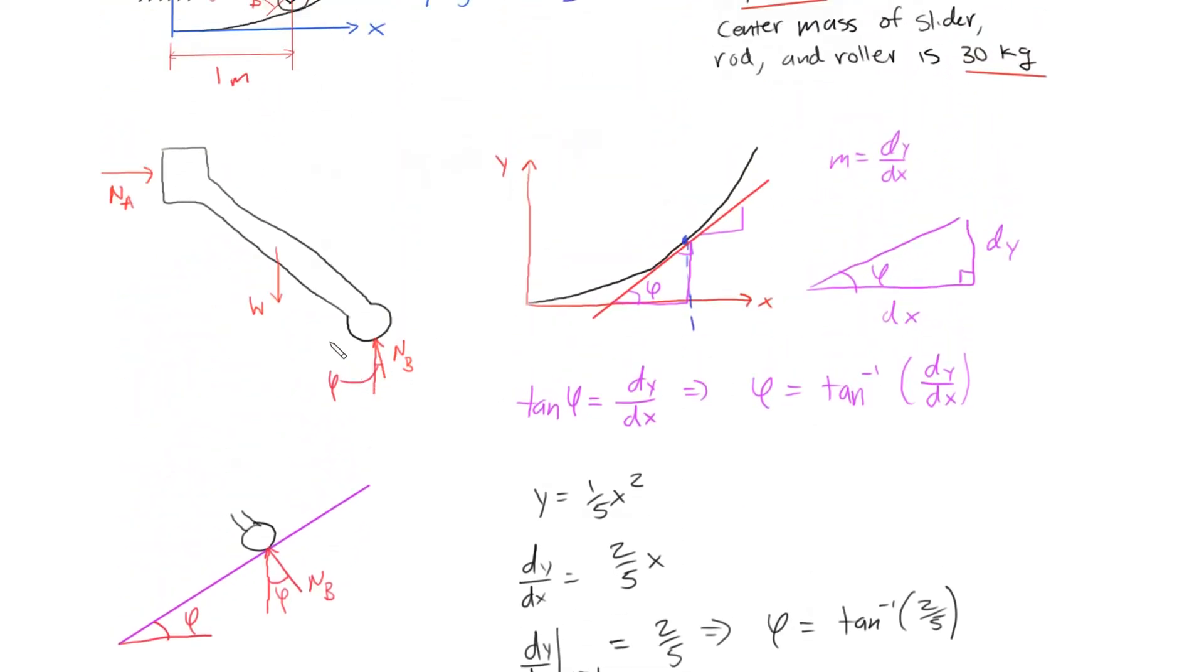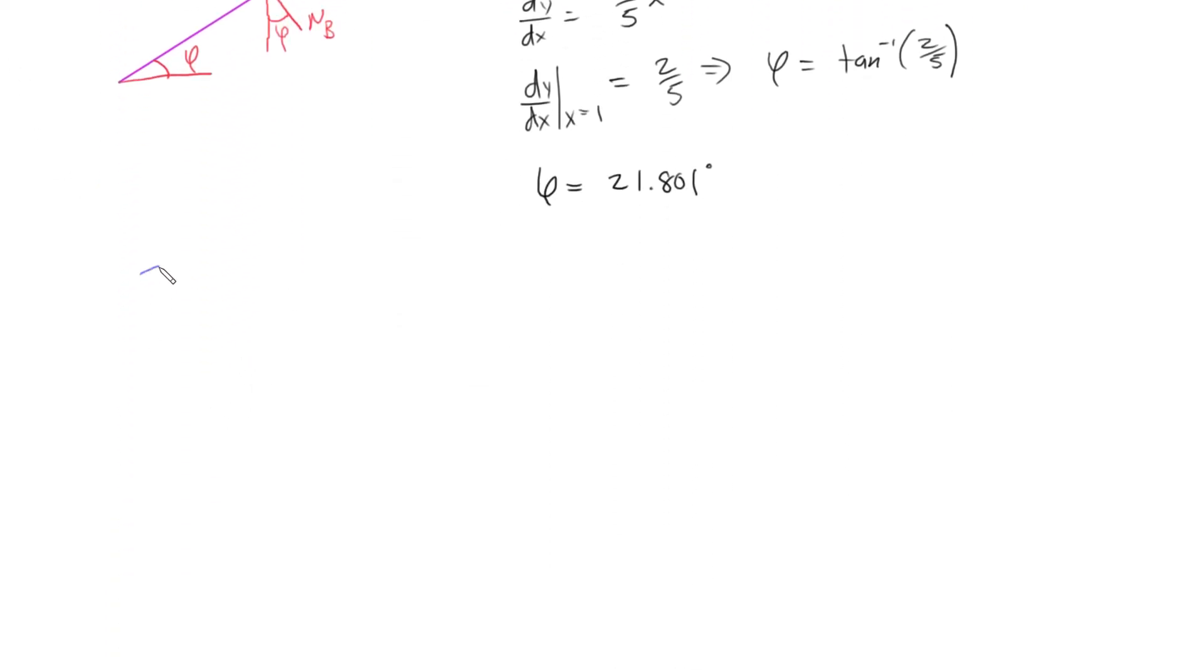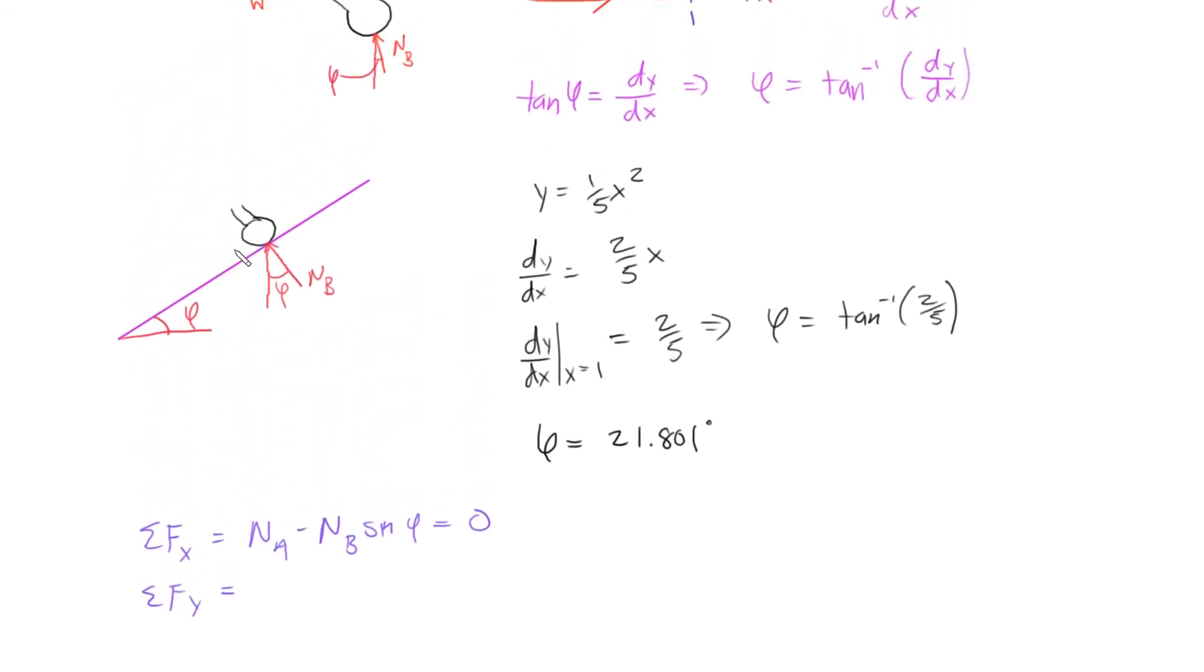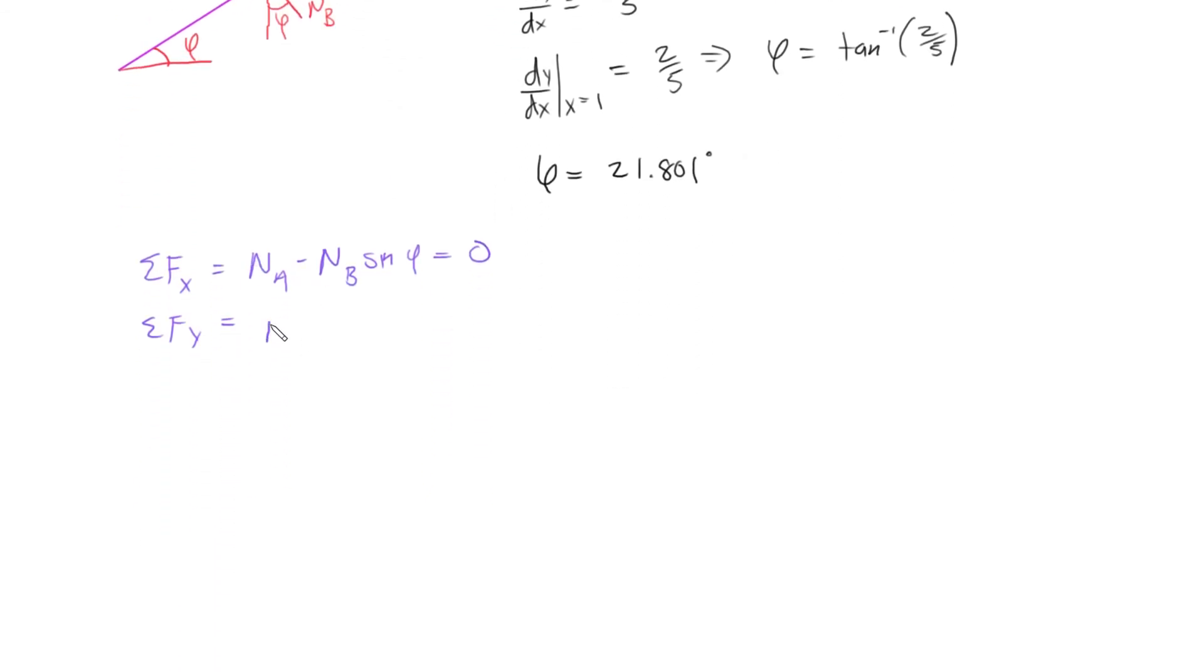Using our free body diagram we could solve this by simply looking at the forces in the x and y direction. Sum the forces in the x direction equal NA minus NB sine phi, which equals zero. And then we get the sum of the forces in the y direction. We define our axes in this orientation x and y, so the y direction we have negative W, and then NB in the y direction, so we could define NB cosine phi minus W equals zero.